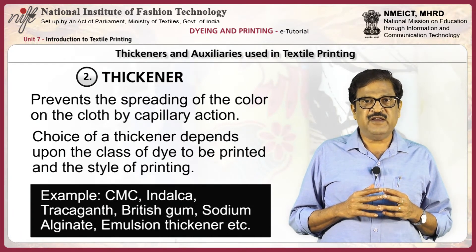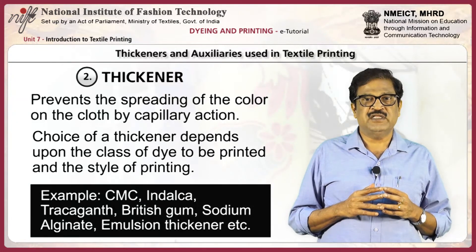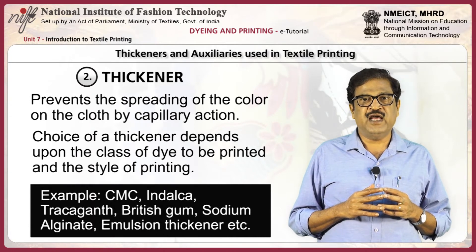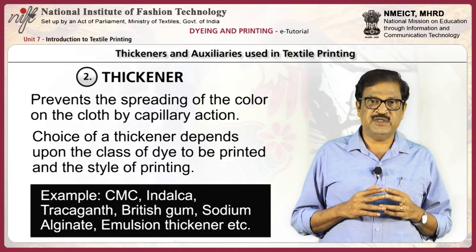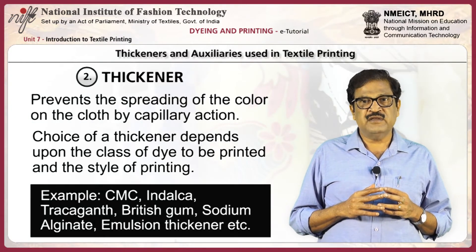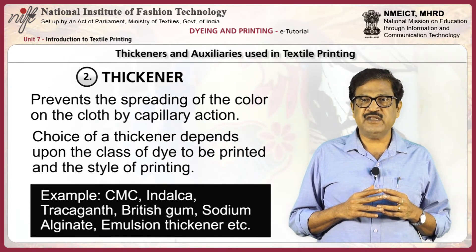Thickeners prevent the spreading of color on the cloth by capillary action. The choice of thickener depends upon the class of dye to be printed and the styles of printing. Examples include CMC, indelga, tragacanth, British gum, sodium alginate, and emulsion thickener.